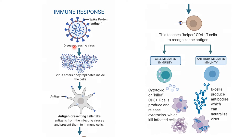Whenever any foreign virus or bacteria comes into our body, it will enter and multiply. After multiplication, our antigen presenting cells, which are present within our body — similar to a patrol — identify these foreign antigens, take them to the immune cells, and create cell mediated immunity and antibody mediated immunity.